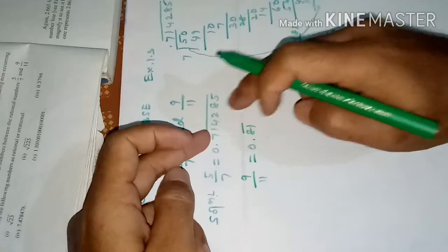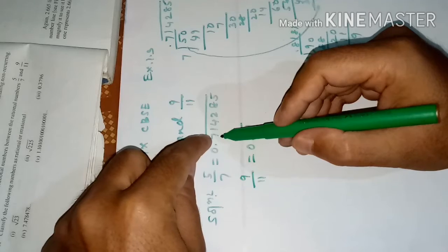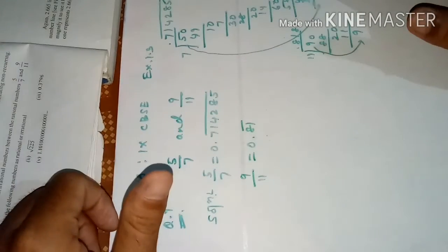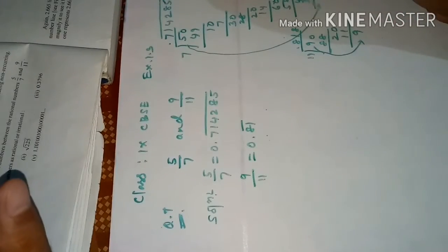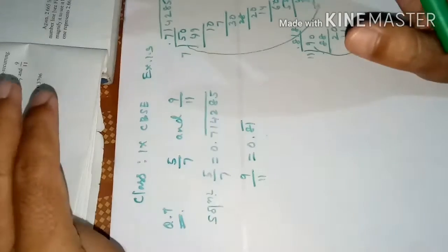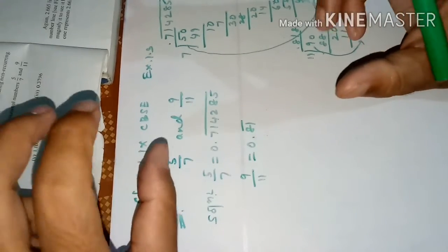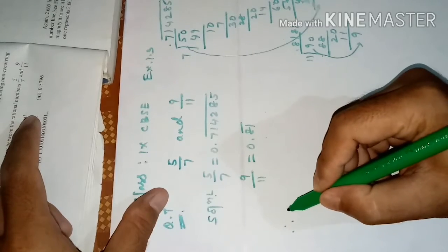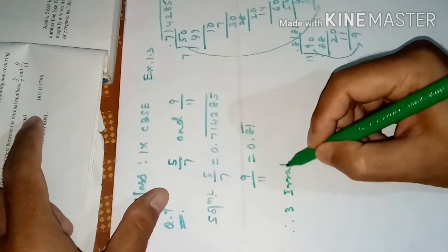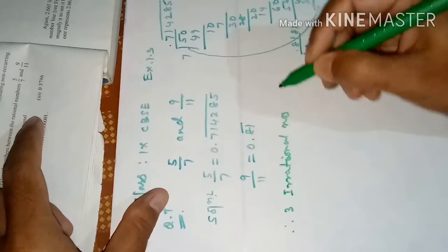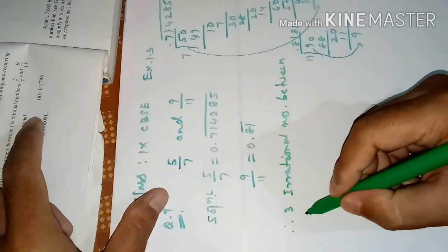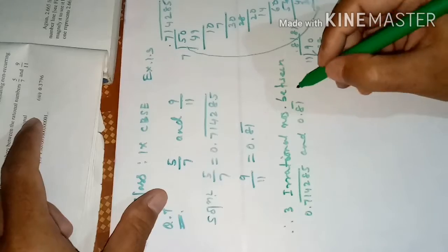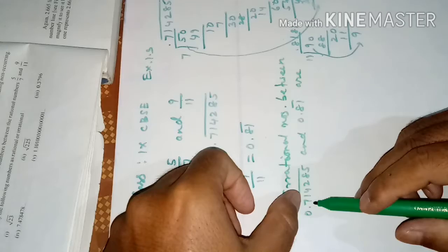Now we have to find three irrational numbers between these two decimal numbers. This decimal starts at 0.7 and the other is 0.8. Between 0.7 and 0.8 there are unlimited numbers. An irrational number means its decimal expansion is non-terminating and non-repeating.